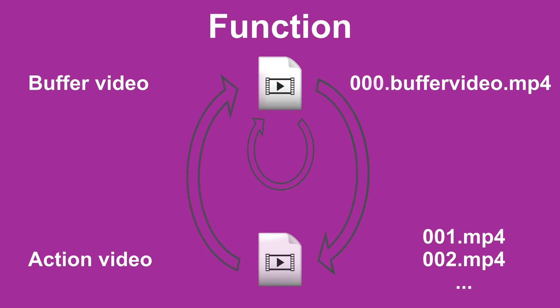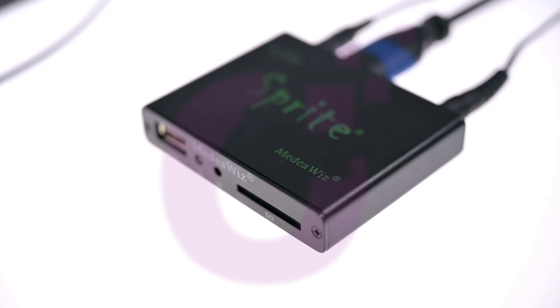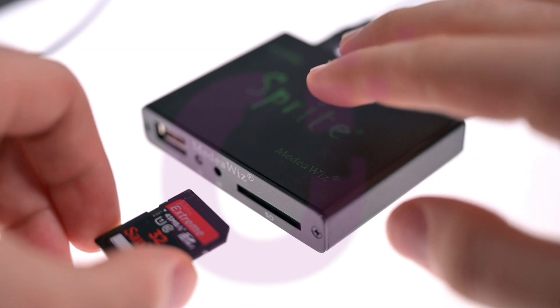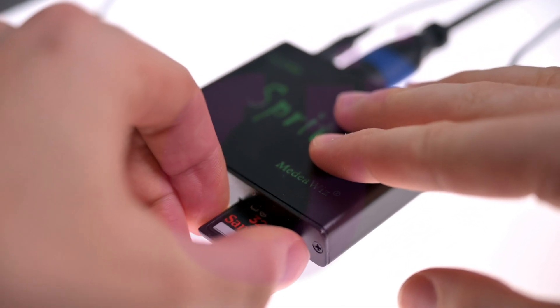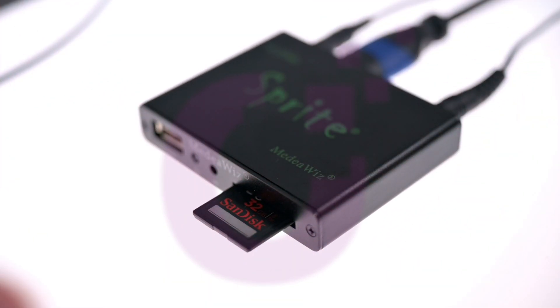The whole file name may never be longer than 32 characters, and we should avoid special characters like hyphen, space, underscore, and so on. We now copy our sample files to the SD card and insert the card into the Sprite.